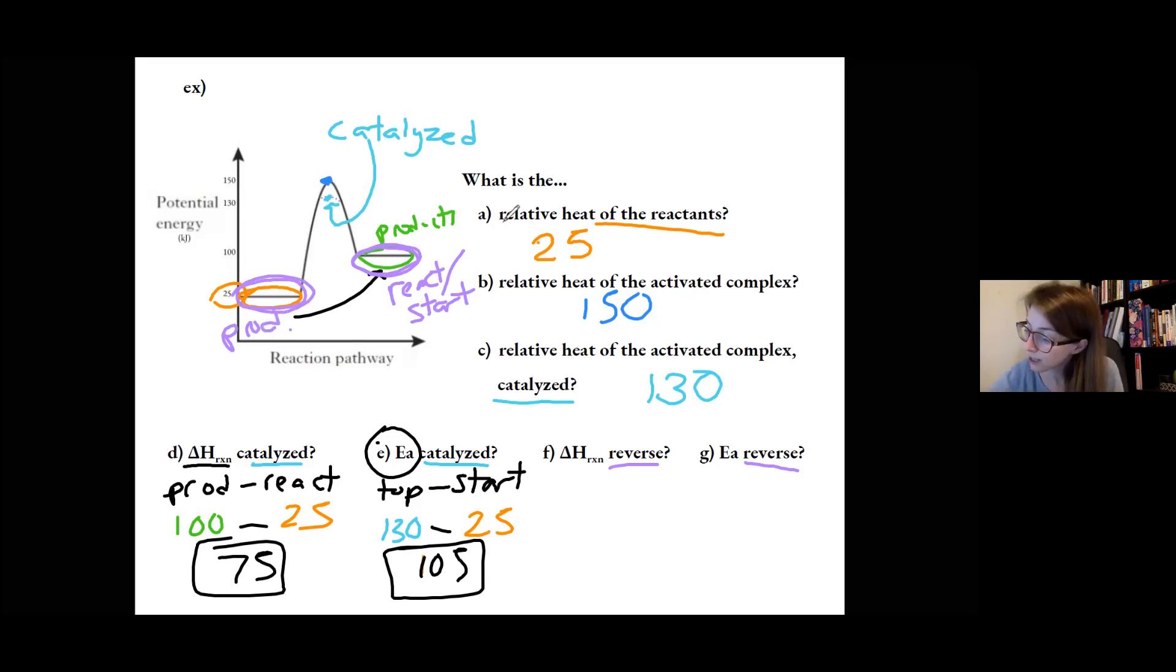So when I do heat of reaction, I'm still doing products minus reactants, but because it's reverse, my products are 25 and my reactants are 100. And I get negative 75. It does so happen you reverse the heat of reaction, it's going to be the same number but a different sign because the change in this graph is constant. It's just a matter of which direction are we going up and then down. Are we ending higher or lower than we started?